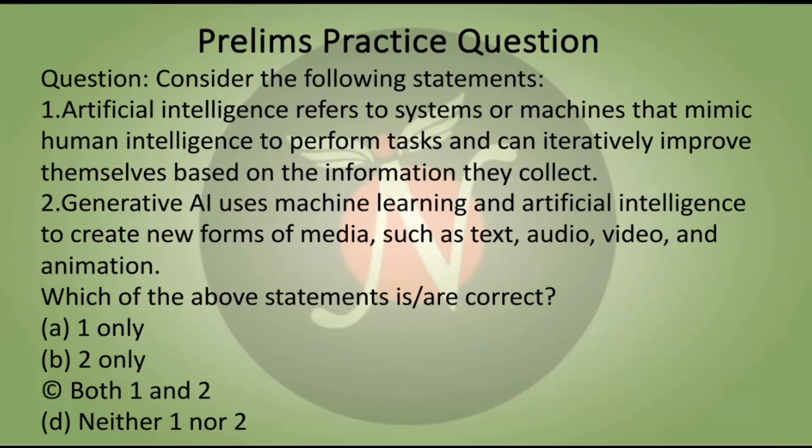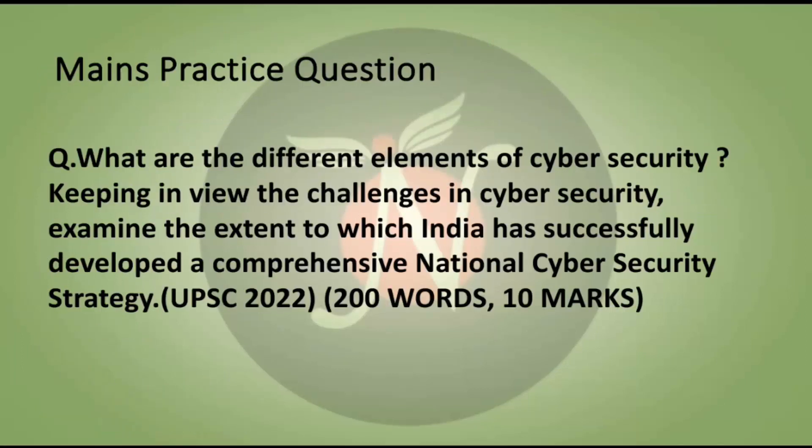Prelims practice question: Consider the following statements. First, artificial intelligence refers to systems or machines that mimic human intelligence to perform tasks and can iteratively improve themselves based on the information they collect. Second, generative AI uses machine learning and artificial intelligence to create new forms of media such as text, audio, video, and animation. Which of the following statements is/are correct? Type your answer in the comments below.